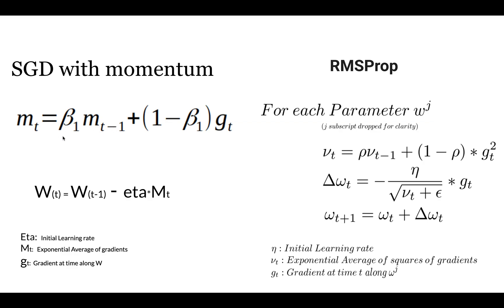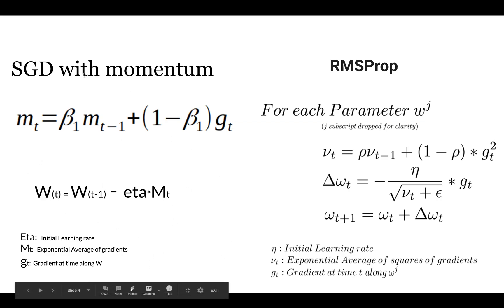Beta one is a learning parameter, generally set to 0.9 experimentally. The equation for SGD with Momentum takes the gradient at time t along with w, multiplied by (1 - beta1), added to the previous momentum multiplied by beta1. Finally, this momentum is multiplied by eta and subtracted from the previous weight to update the current weight.